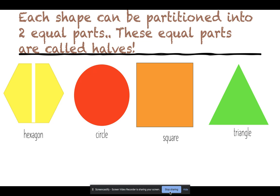My next shape is a circle. Right now my circle is a whole. But when I cut it, it is now in half. It has two equal parts.